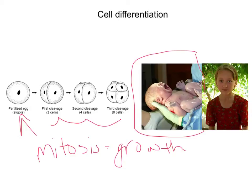As the organism is growing, those cells will start to specialize, and that's how you'll end up with hair cells, liver cells, blood cells, and bone cells. But remember, those cells are still genetically identical to one another.